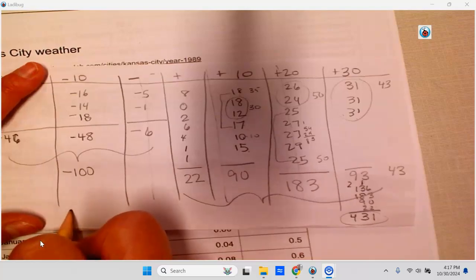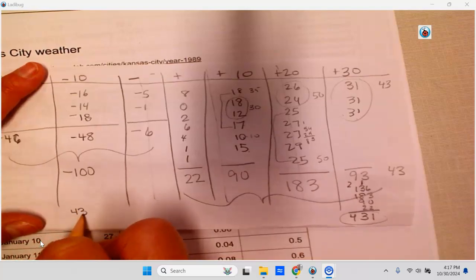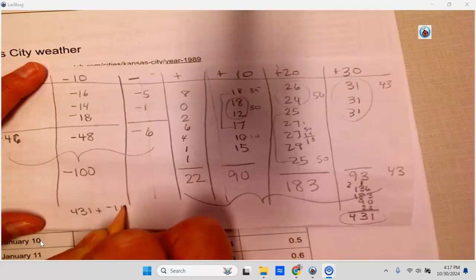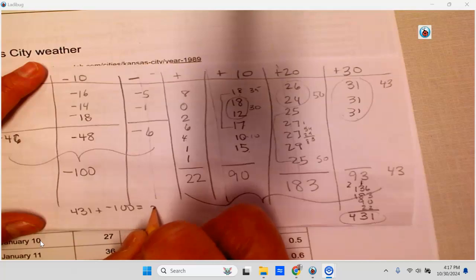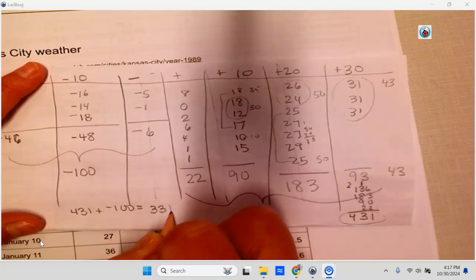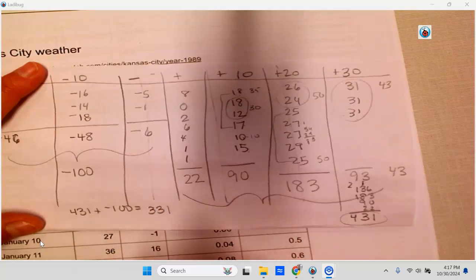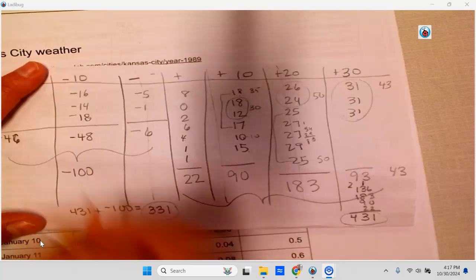So when I combine them together, different signs subtract this time. So 431 plus negative 100 equals 331. That's the total. Now I have to divide this by 31.